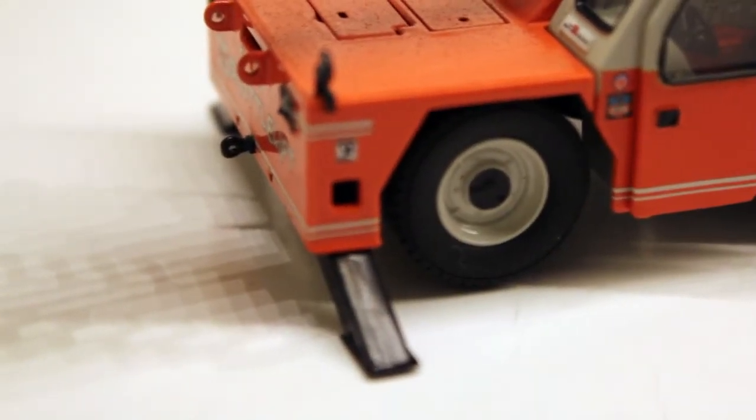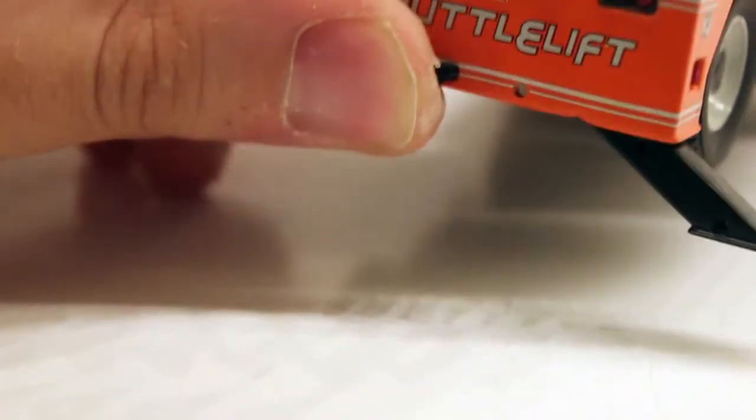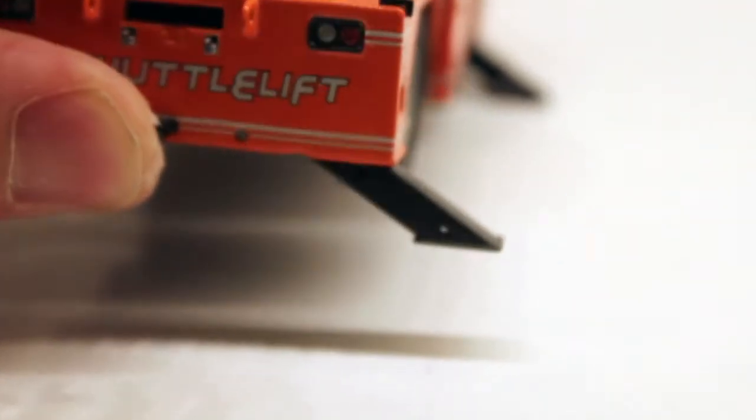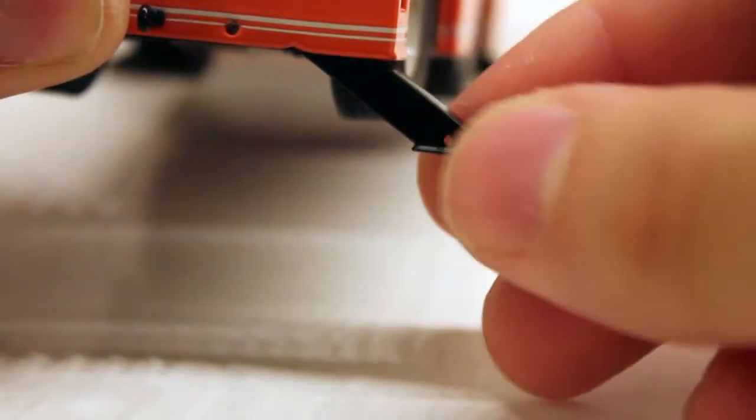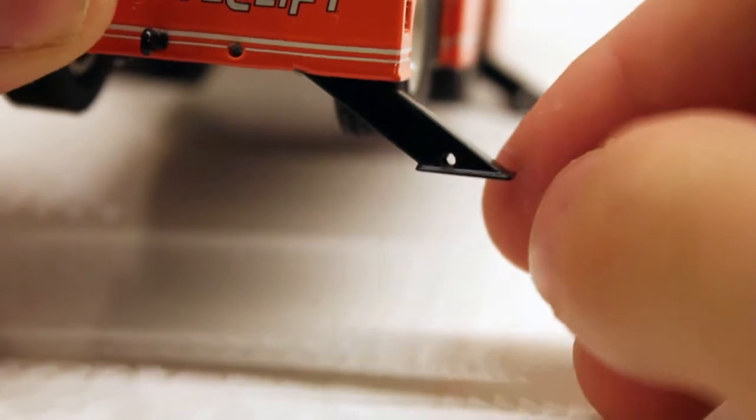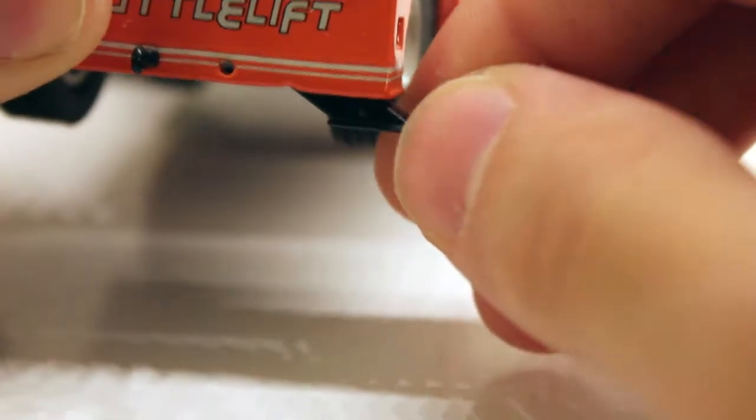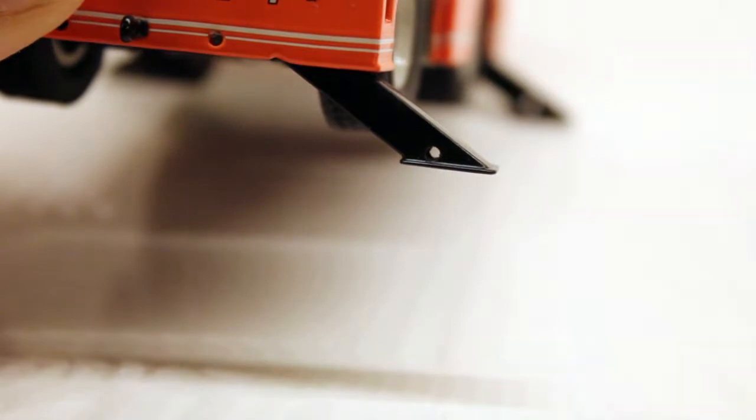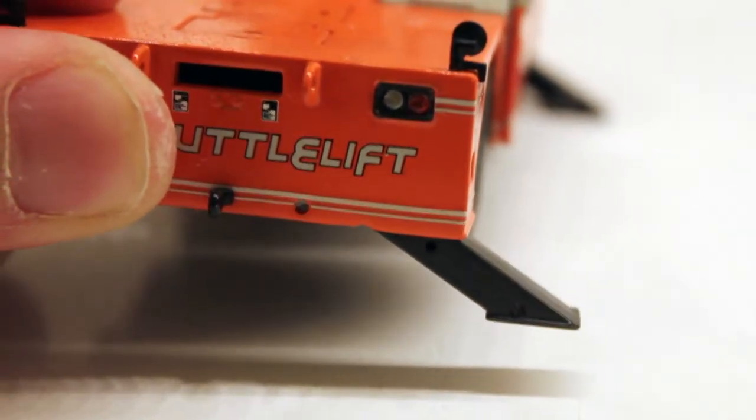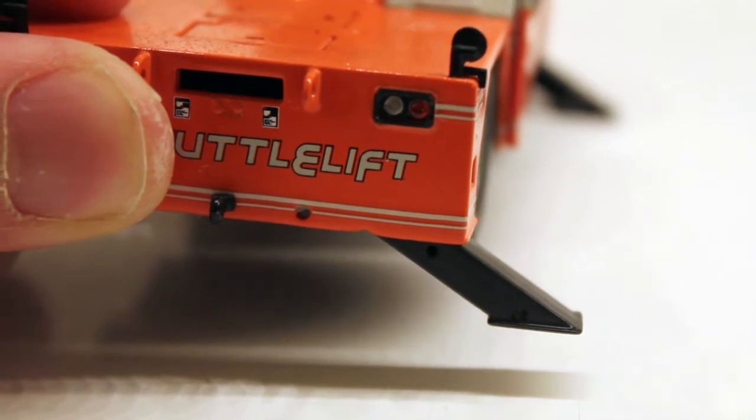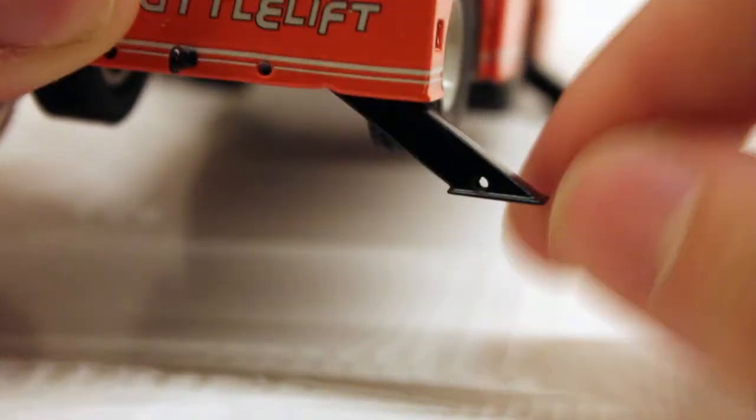Looking at them, you can see they have these holes in them. There's one right there and one right there. I don't know why they're there. Maybe they're there so you can put a pin there so they won't slide up. I'm not sure, to be honest, but they are there and they do look pretty cool. They kind of look like real outriggers that sometimes have holes in them.